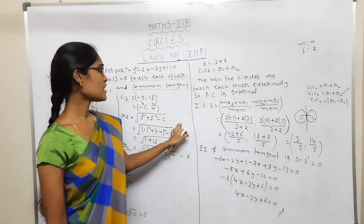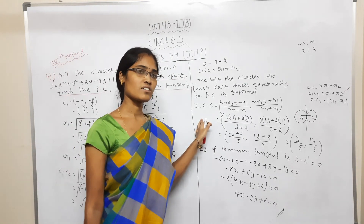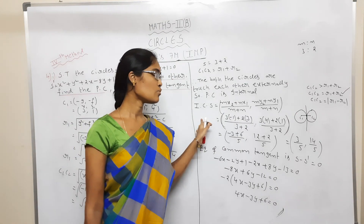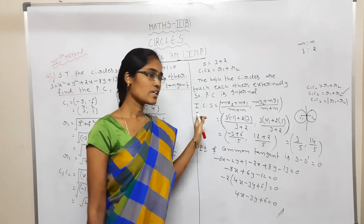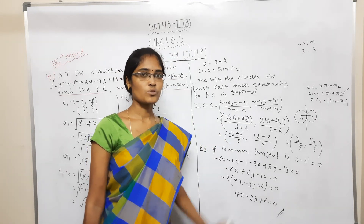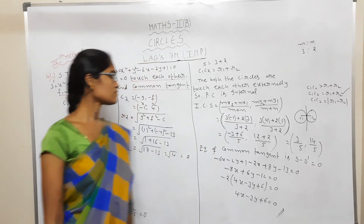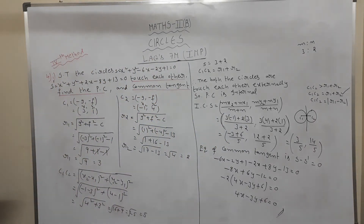So in summary: both circles touch each other externally, point of contact is (3/5, 14/5), and the equation of the common tangent is 4x − 3y + 6 = 0. This is a very important problem. Thanks for watching.